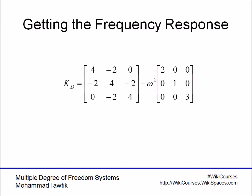To get the frequency response, we write the dynamic stiffness matrix as kd = k minus omega squared times M. For each value of omega, we re-evaluate the dynamic stiffness matrix. Since k and M are constant, all you need to do is plug in the value of omega and compute kd.